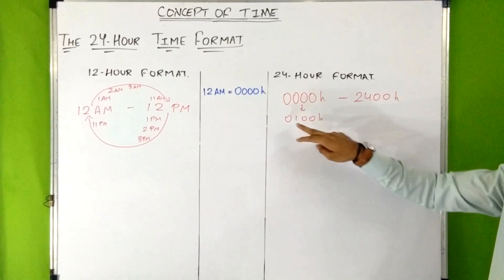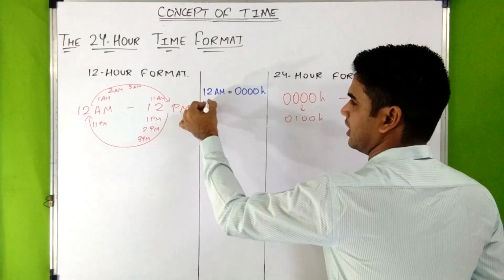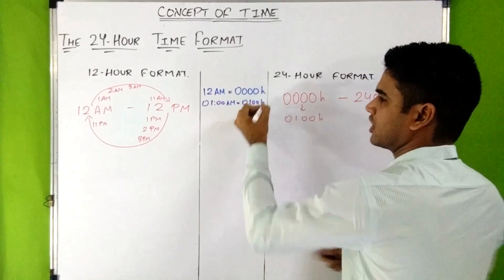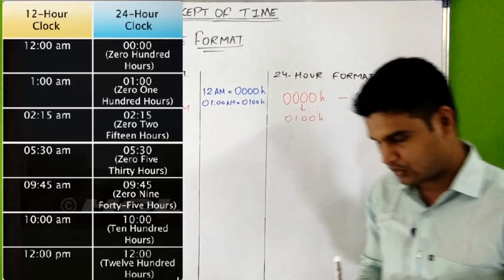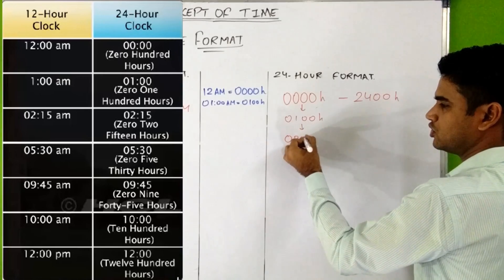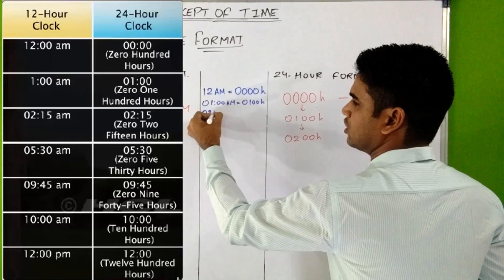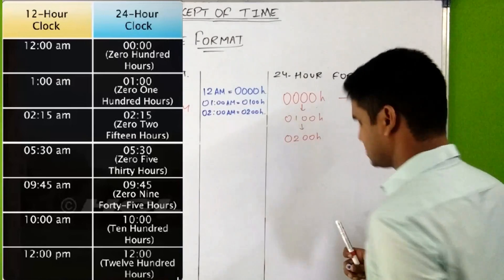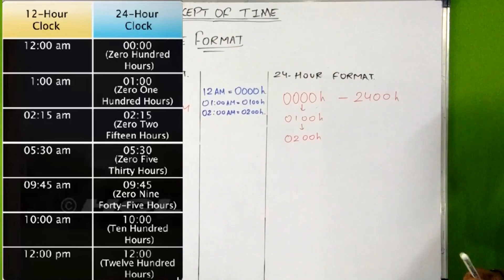So 1 AM of the 12-hour format is written as 0100 hours in 24-hour format. Then just after one more hour, when it's 2 AM, it is written as 0200 hours. So 2 AM of the 12-hour format is written as 0200 hours in 24-hour format, and it is read as 'zero two hundred'.